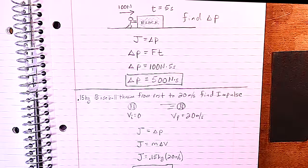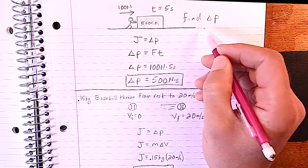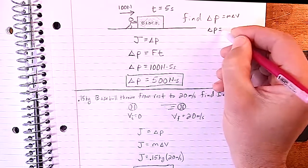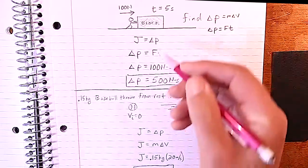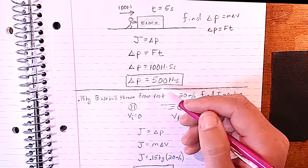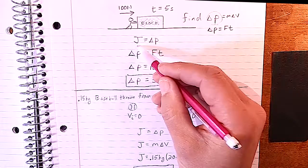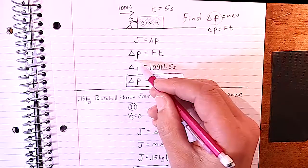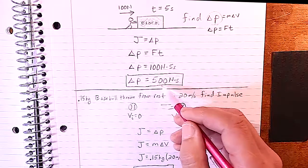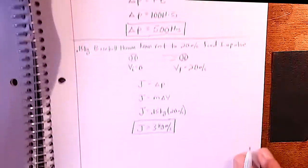One trick in these problems is asking for change in momentum without giving M and delta V. They want to see if you know that delta P equals FT. For example: a person pushes on a block with 100 Newtons of constant force for five seconds — find the change in momentum. Since impulse equals change in momentum, delta P equals F times T, so 100 times 5 gives a change in momentum of 500 Newton seconds.